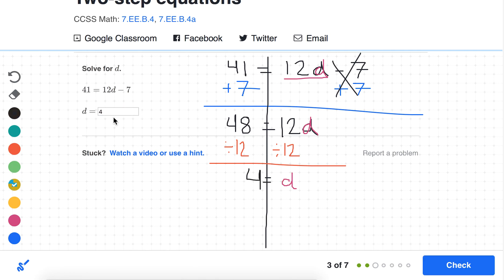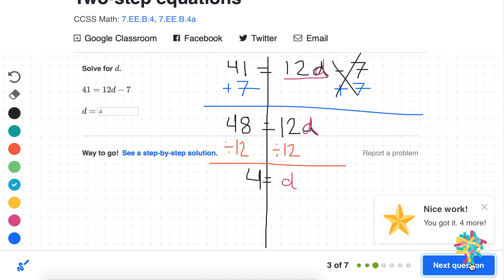And if we plug that back in, 12 times 4 is 48, 48 minus 7 is 41. It works.